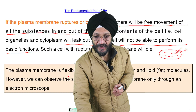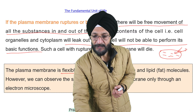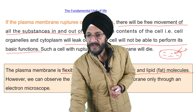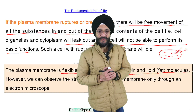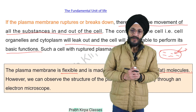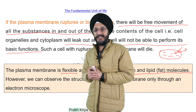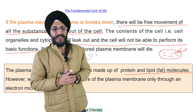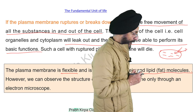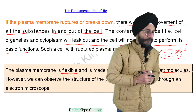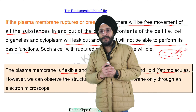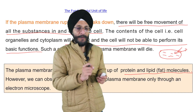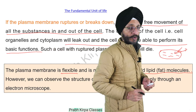Such a cell with a broken or ruptured plasma membrane will die. The plasma membrane is flexible and is made up of protein and lipid molecules. However, we can observe the structure of the plasma membrane only through an electron microscope.